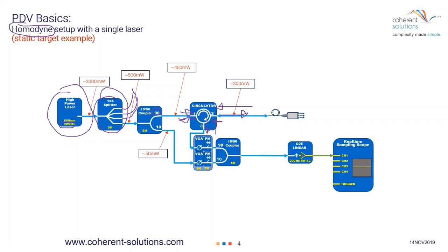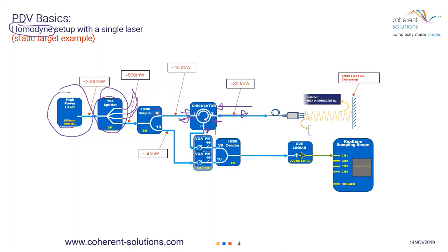We have a little bit of loss going through the circulator, so we have roughly 300 milliwatts on this side. The whole purpose of this is to send the light to the probe, which bounces off the target. We have a static target here, so it's not moving. We have 1,550 nanometers wavelength of light bouncing off of the target. Since there's no motion, there's no change and no Doppler shift.